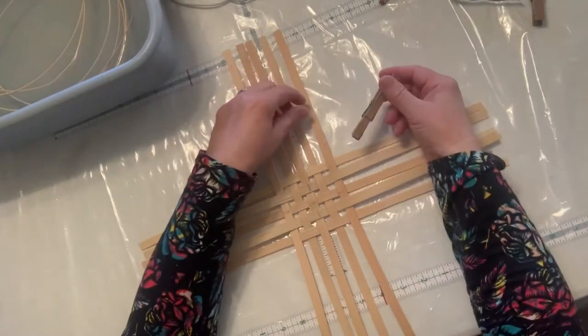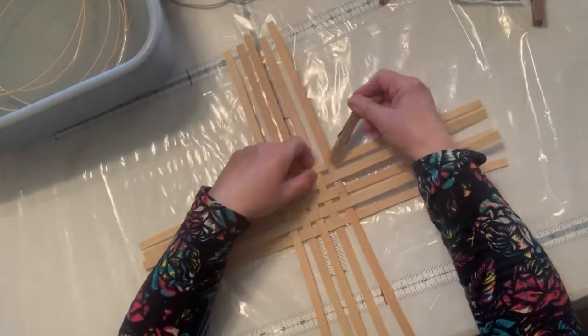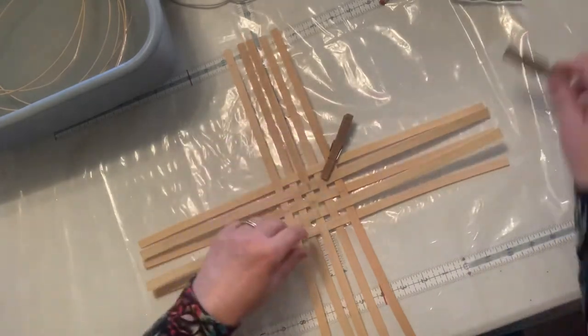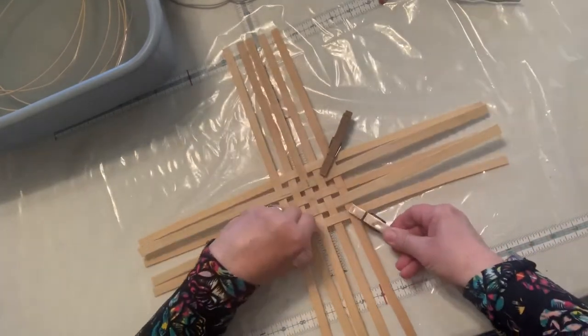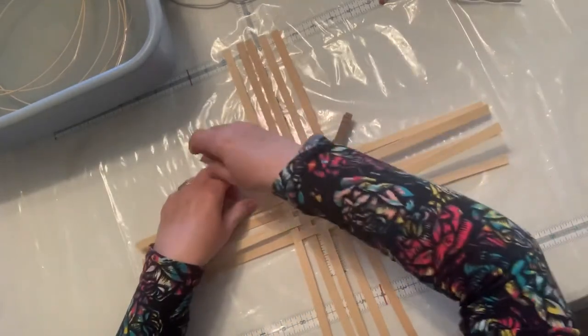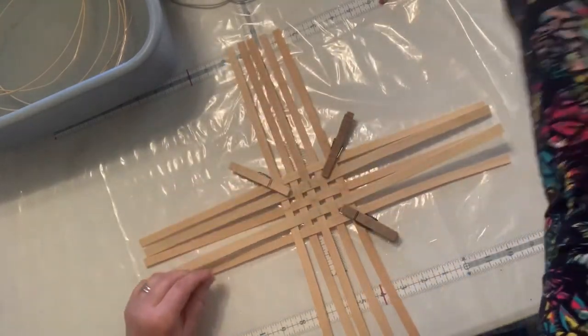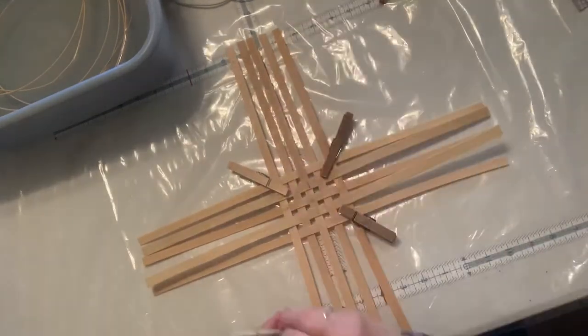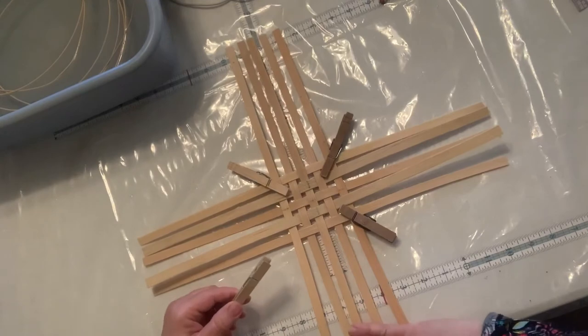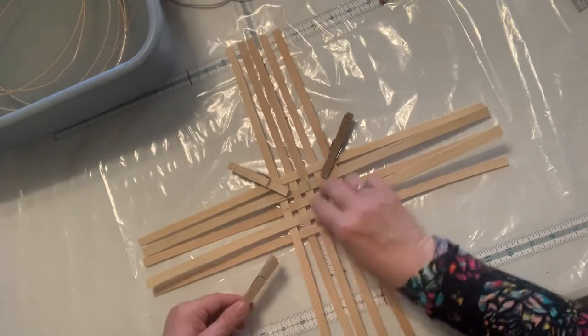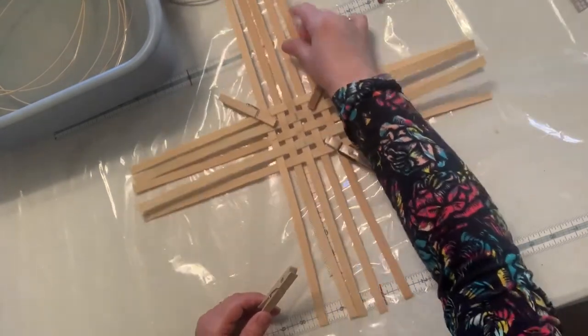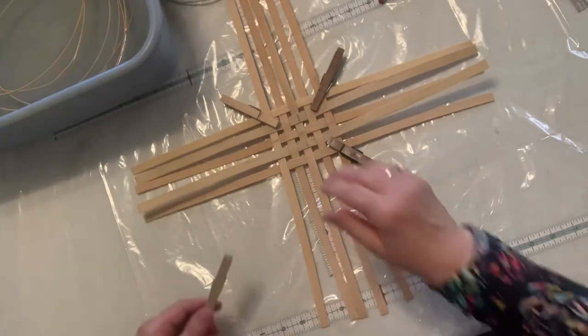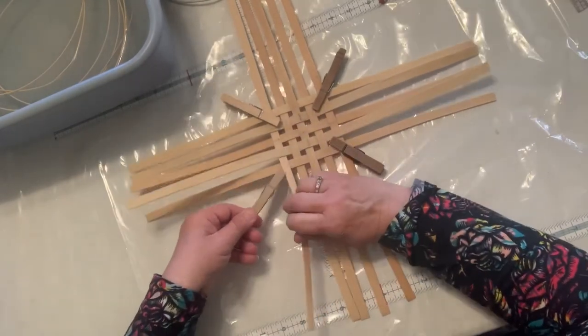So then what you do is you take a clothespin and you take your corners and you clothespin those corners shut, so when you go to twine, they aren't going to move on you. And sometimes body parts do get in the way of the ones that are hanging here over the table. So I try to, if you have room, you can pull them up so they're not being touched by body parts.